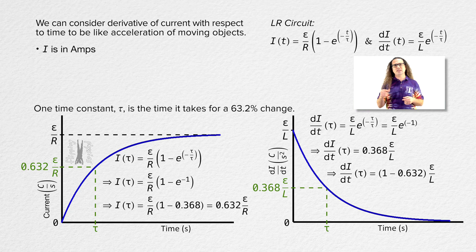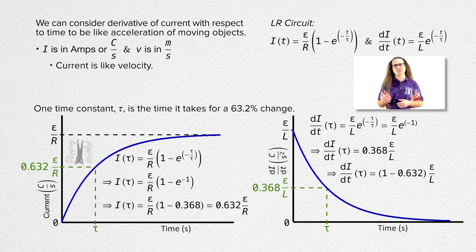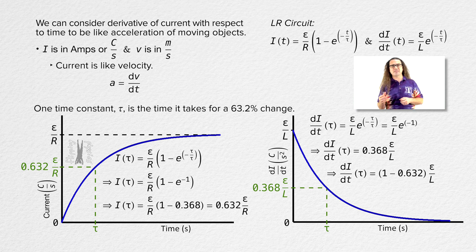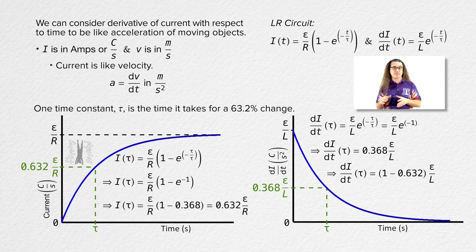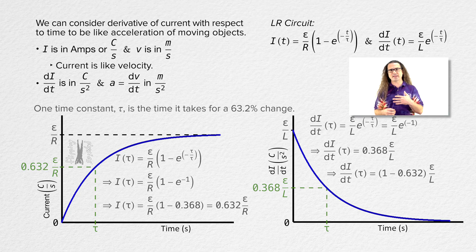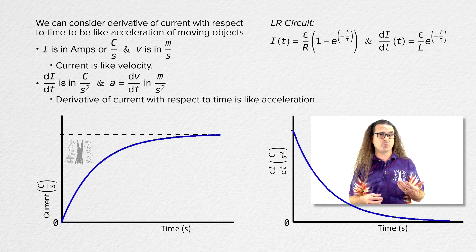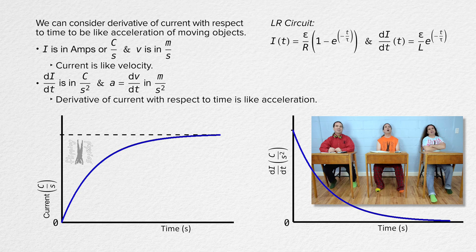Current is in amps, and amps are coulombs per second, and velocity is in meters per second. So current in a circuit is like velocity for a moving object. The derivative of velocity with respect to time is acceleration. Acceleration has units of meters per second squared. The derivative of current with respect to time has units of coulombs per second squared. So the derivative of current with respect to time for a circuit is like acceleration for a moving object.